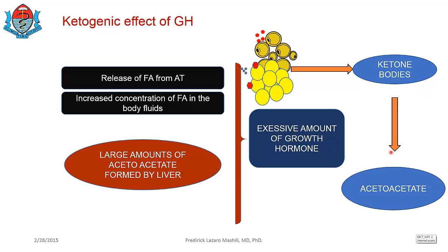Some of the remaining fatty acids will be converted to ketone bodies. A good example of ketone bodies is what is known as acetoacetate, or acetoacetic acid. This process occurs in the liver, so you end up with a large amount of acetoacetate being formed. This is known as ketogenesis, and the whole effect is known as the ketogenic effect of growth hormone.